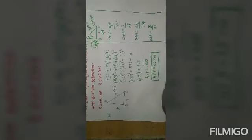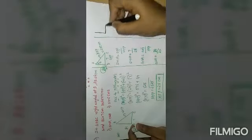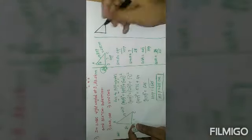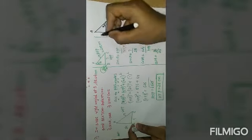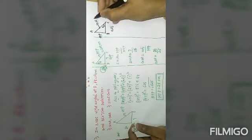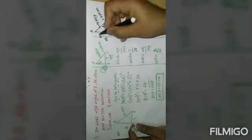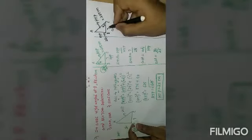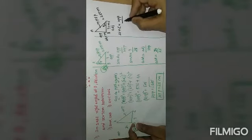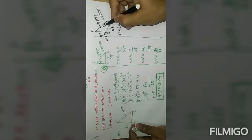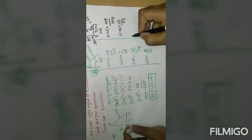Next, if we take theta at angle C, this becomes the adjacent side and this becomes the opposite side. The hypotenuse remains 25 centimeters. So sine C equals opposite by hypotenuse, which is 24 by 25.